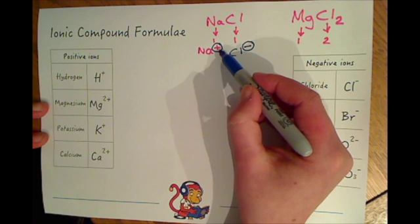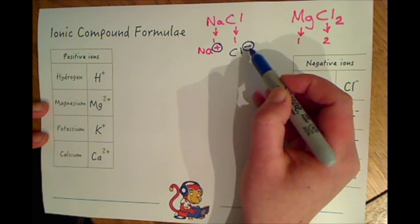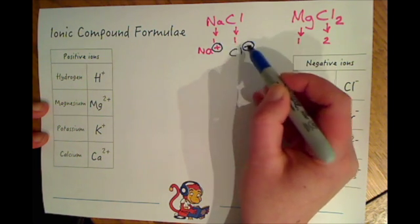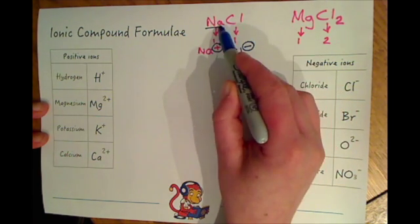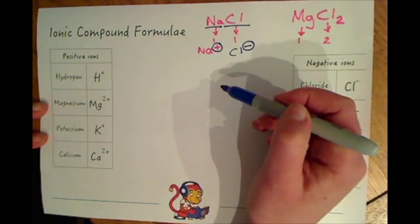So the positive cancels out the minus and we have no overall charge on the compound, so we just need one sodium and one chloride ion.